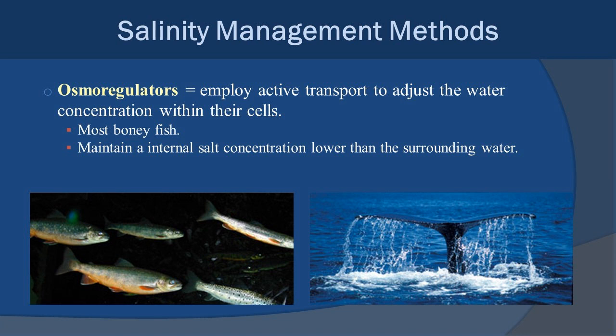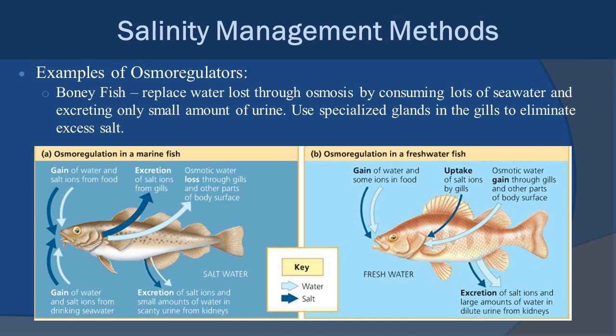The other option is osmoregulators, where the cells have a lower salt concentration than the ocean environment — the cells are hypotonic. In this case they need to employ active transport to adjust water concentration within their cells because they continually lose water through osmosis. Most bony fish and marine mammals — like us — do this. Fish replace water lost through osmosis by consuming lots of seawater, excreting only small amounts of urine, and using specialized glands in their gills to eliminate excess salt.